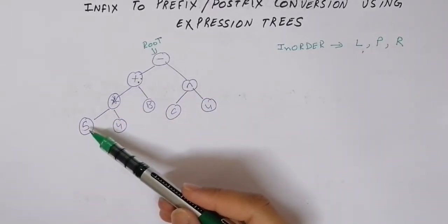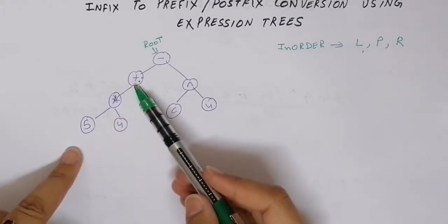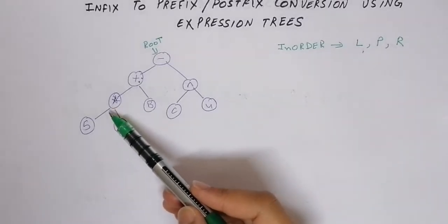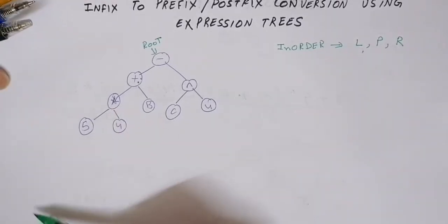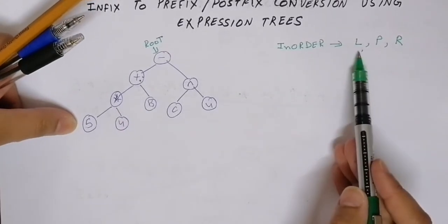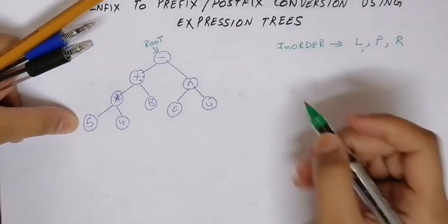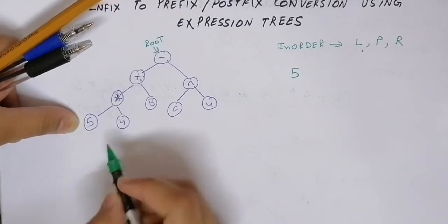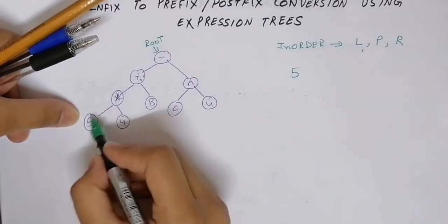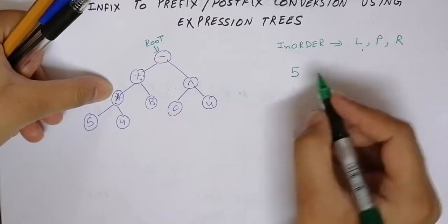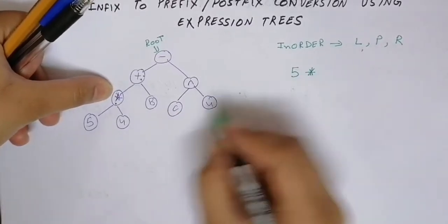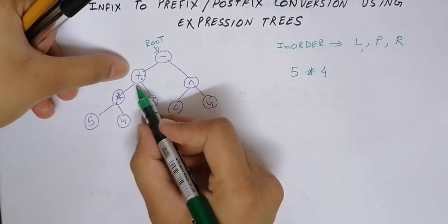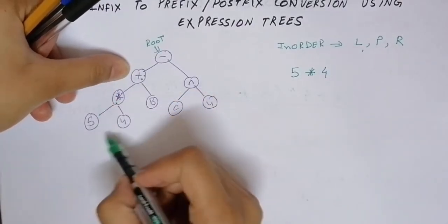We go towards the left subtree and continue visiting left subtrees until we receive null. Left of minus is plus, left of plus is multiply, left of multiply is 5, and left of 5 is null. When we receive null, we print the node itself — 5 — then visit the right, which is also null, so we move back to the parent and print multiply.